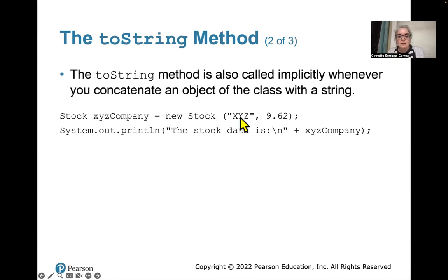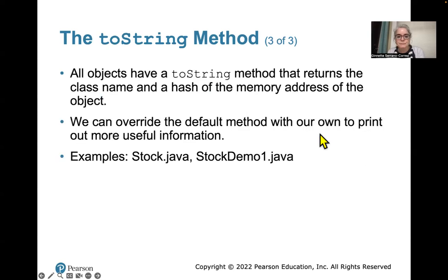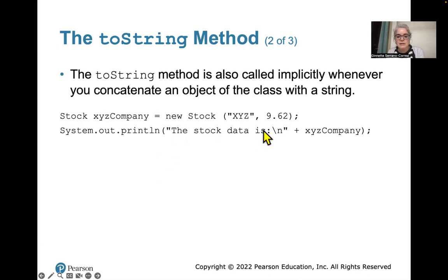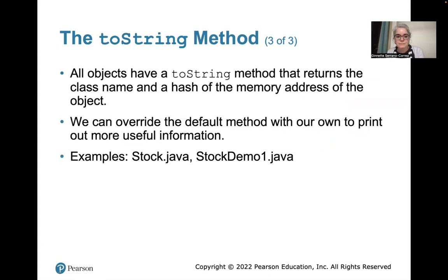When you call System.out.println with xyzCompany as the object, it's going to print out the stock data — XYZ and 9.62. That's why the toString method is called implicitly whenever you concatenate an object of the class with a String — it's getting called right there. All objects have a toString method that returns the class name and a hash of the memory address of the object.